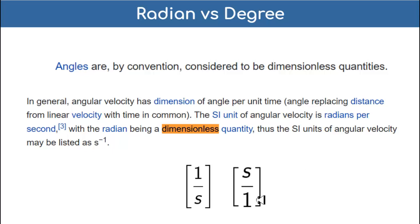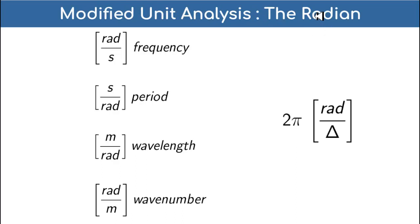That is why I came up with modified unit analysis - I replaced this numerical value 1 with an actual symbol. In modified unit analysis, if I'm in the domain of the radian, then frequency has units radians per second. I actually write the 'rad' in there. The unit of frequency is specifically radians per second, the time period is specifically seconds per radian, wavelength is specifically meters per radian, and wave number is radians per meter.